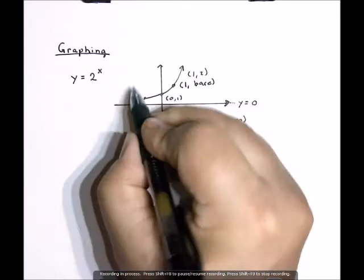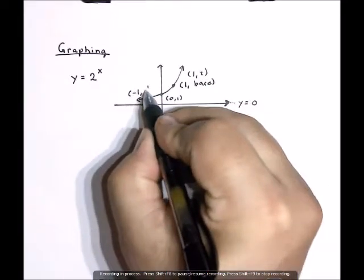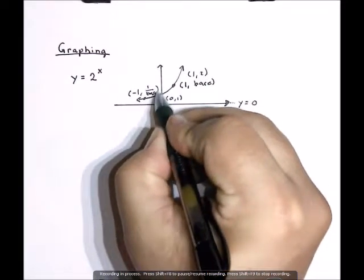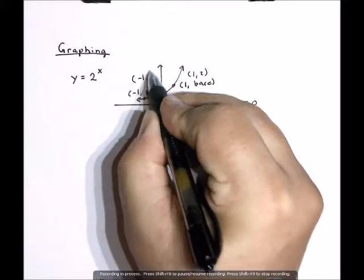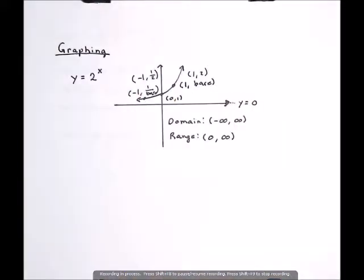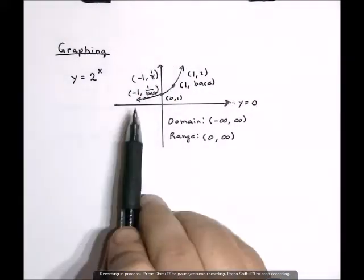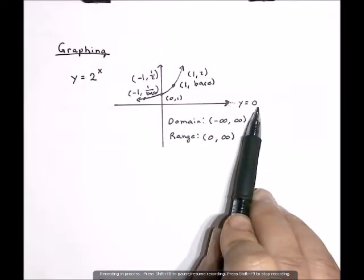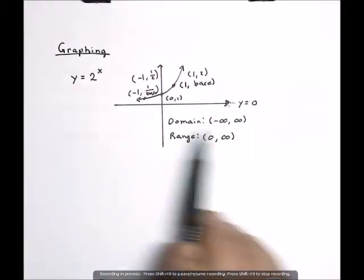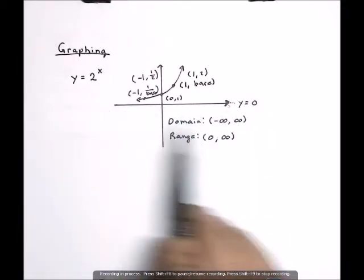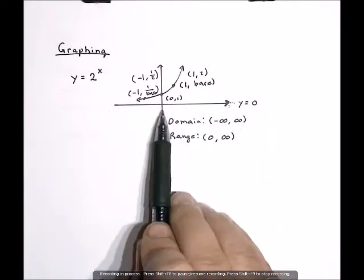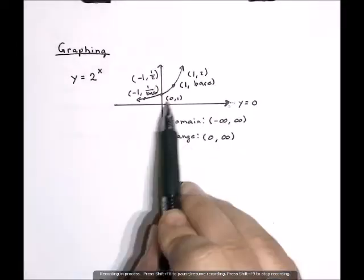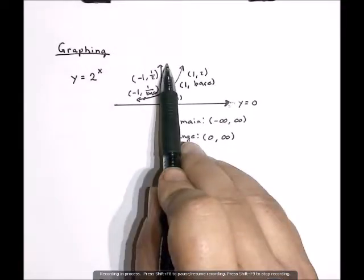And when we get to negative 1, we're at 1 over the base, or (-1, 1/2). But what you really need to remember is that this up-curving thing has a horizontal asymptote at y equals 0. The domain, which are the x's, are all real numbers. And the range, which are the y's, are 0 to infinity, or just the part strictly above the x-axis.